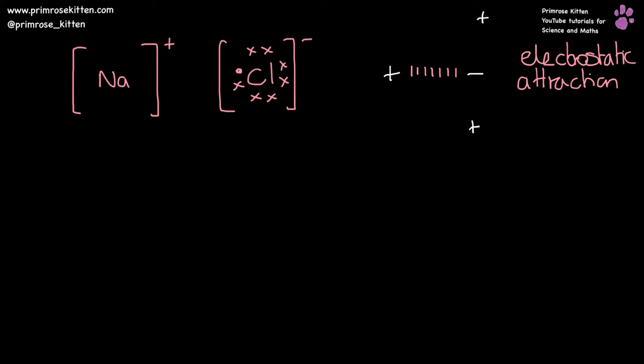So instead of just having one positive ion and one negative ion, what you actually have are massive, massive structures which are positive and negative all over the place.